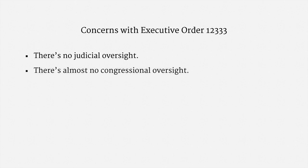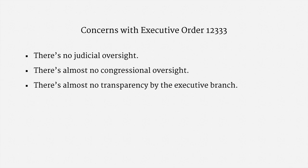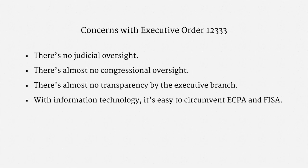That's raised a lot of concern. Here are a few specific criticisms. First, there's no judicial oversight — FISA doesn't cover these operations, so the FISA court isn't even notified of them. Second, there's almost no Congressional oversight; members of the House and Senate Intelligence Committees have publicly noted they don't much supervise operations under Executive Order 12333. Third, there's almost no transparency by the Executive Branch. Fourth, with information technology it's easy to circumvent ECPA and FISA — executive agencies can simply relocate their operations outside the United States and escape those protections.